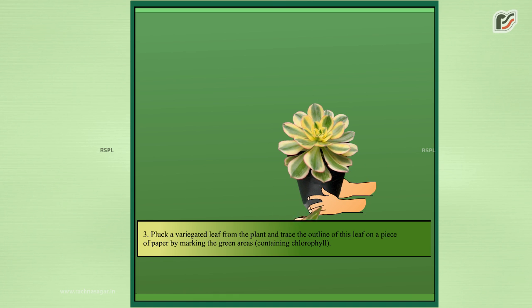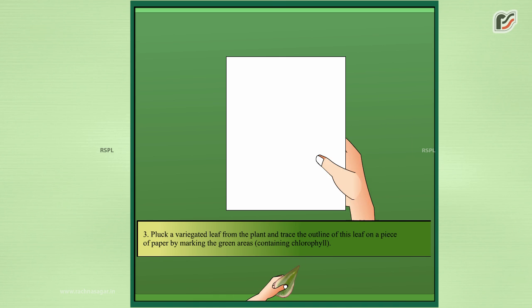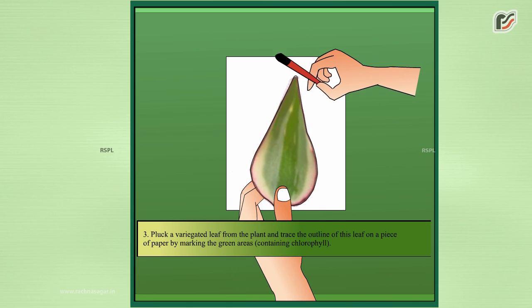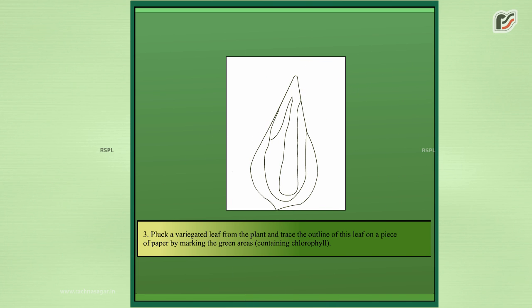Pluck a variegated leaf from the plant and trace the outline of this leaf on a piece of paper by marking the green areas containing chlorophyll.